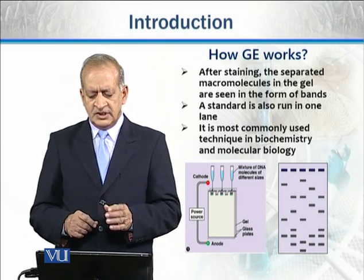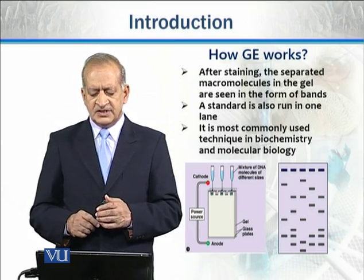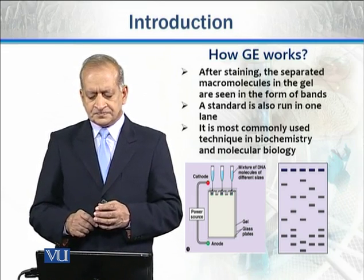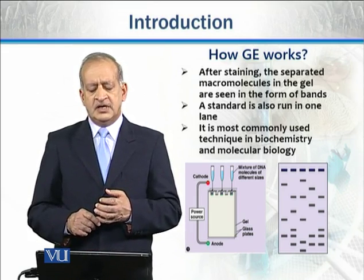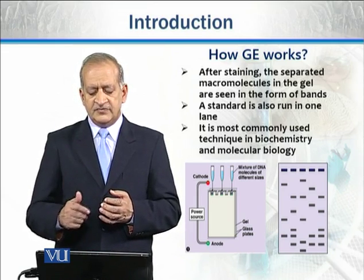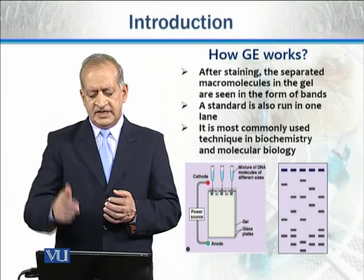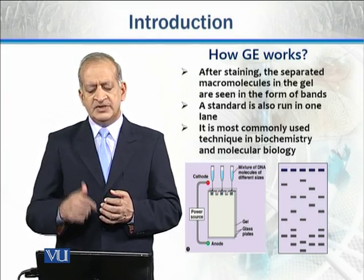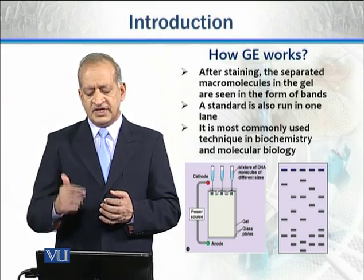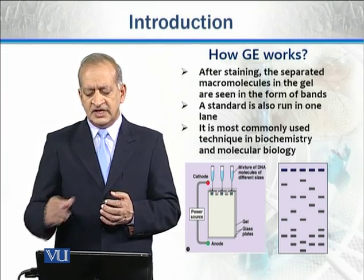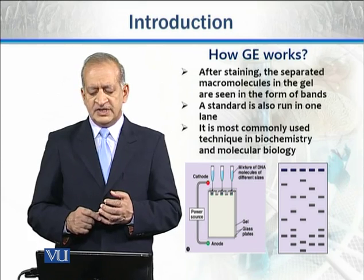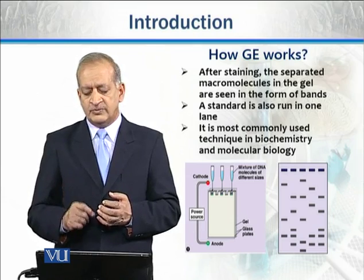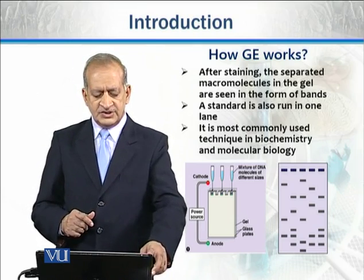We can see a brief procedure illustrated in the diagram on the slide. On the left side, the gel is being prepared and is ready to run — samples are being loaded and electric current is applied, causing the samples to begin moving from cathode to anode. On the right side, the gel shows different types of macromolecules present in the form of bands.